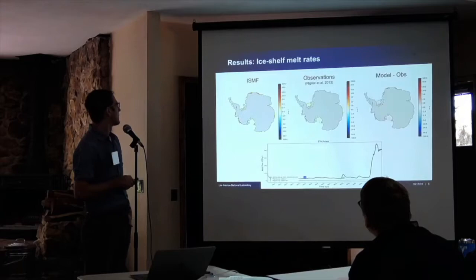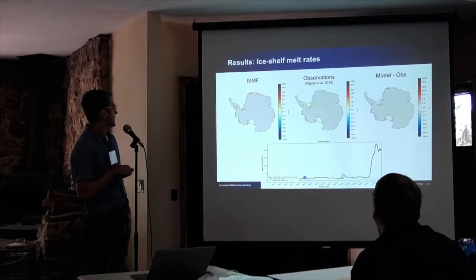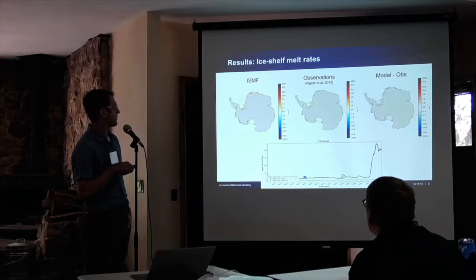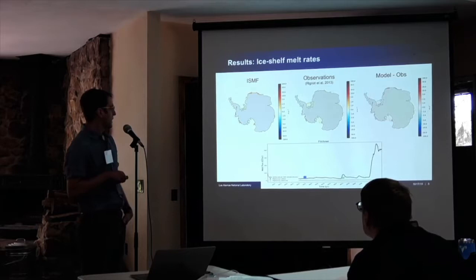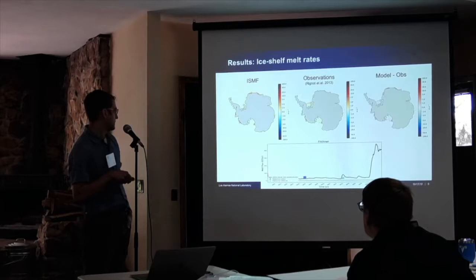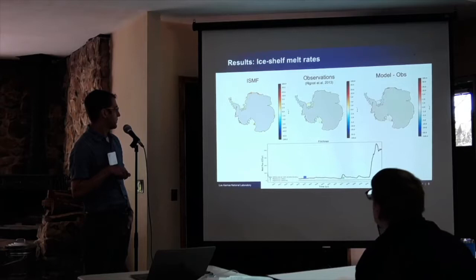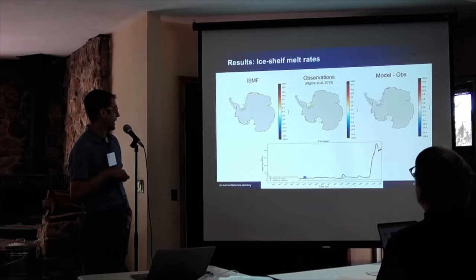I'll be focusing on two simulations. The ISMF simulation includes ice shelf melt fluxes calculated prognostically by the model across the entirety of Antarctica. There's a second run that branches off from the first at year 50, where we've disabled melting in the region of East Antarctica, but melting is still being calculated beneath Filchner-Ronne and the rest of the continent.